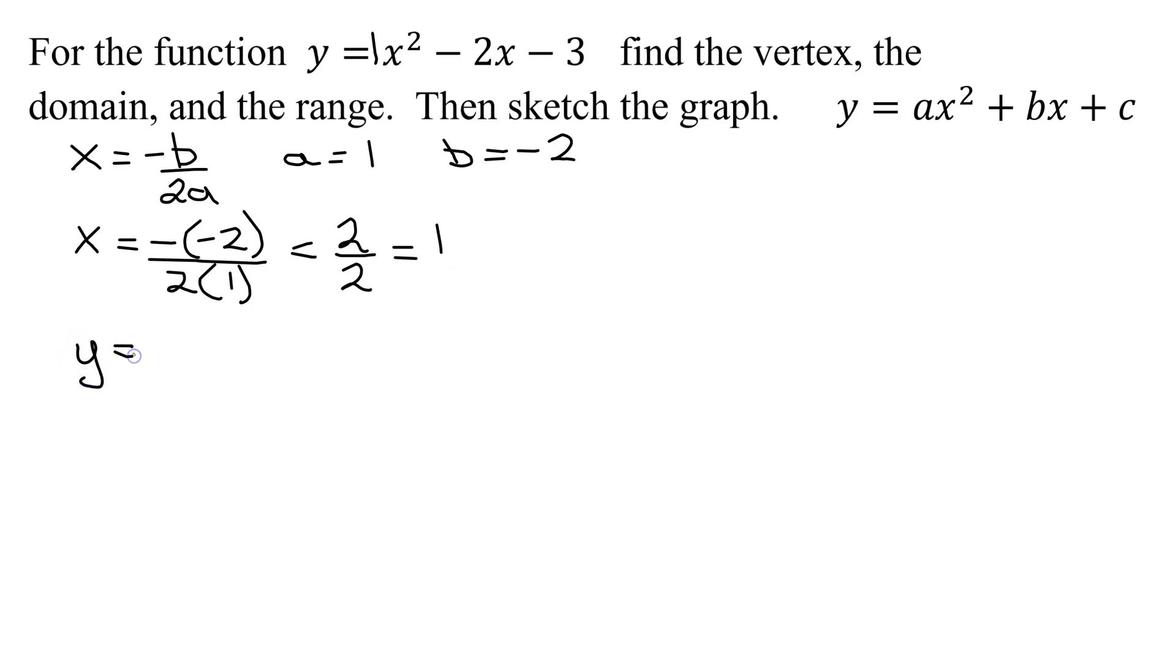Now, to find the y value of the vertex, all we have to do is plug 1 into our original equation. So y equals x squared, so it's 1 squared, minus 2 times x, which is 1, minus 3. So y equals 1 squared is 1, minus 2 times 1, that's minus 2, minus 3. So y equals 1 minus 2 is negative 1, negative 1 minus 3 is negative 4. So I now know my vertex is at the coordinate 1, negative 4.